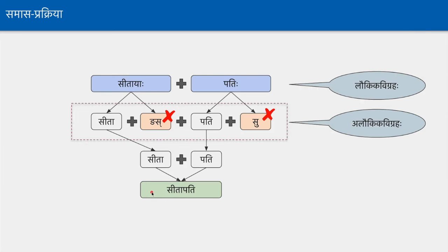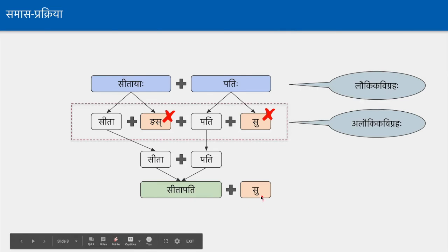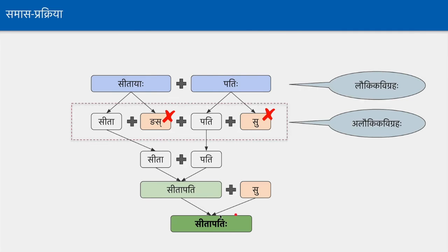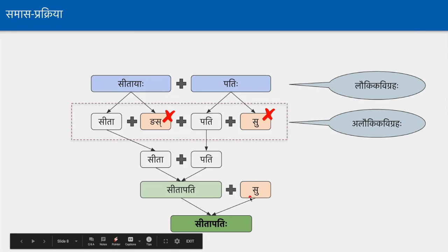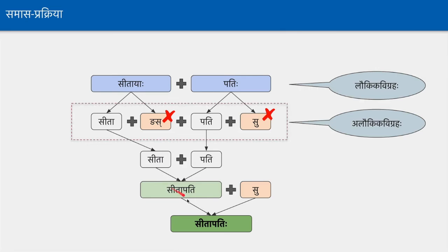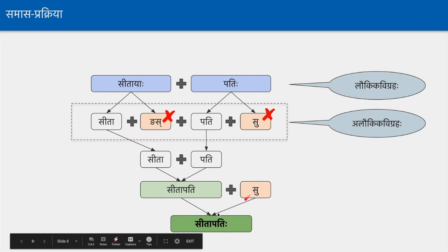Now, based on the sentence in which you want to use it, we add the corresponding Vibhakti Pratyaya to the Samastha Pratipadikam. For example, if you want to use Sita Patihi agacchati, we add Su and produce Sita Patihi. If you want to use Tritiya or Dvitiya, the corresponding Vibhakti Pratyaya will be attached to Sita Pati. So Sita Pati is the Samastha Pratipadikam, and the final Sita Patihi is the Samastha Padam. A Padam is always Subantam or Tingantam — Pratipadikam plus Subpratyaya results in the Padam, which is the Subantam, which is the Samastha Padam.